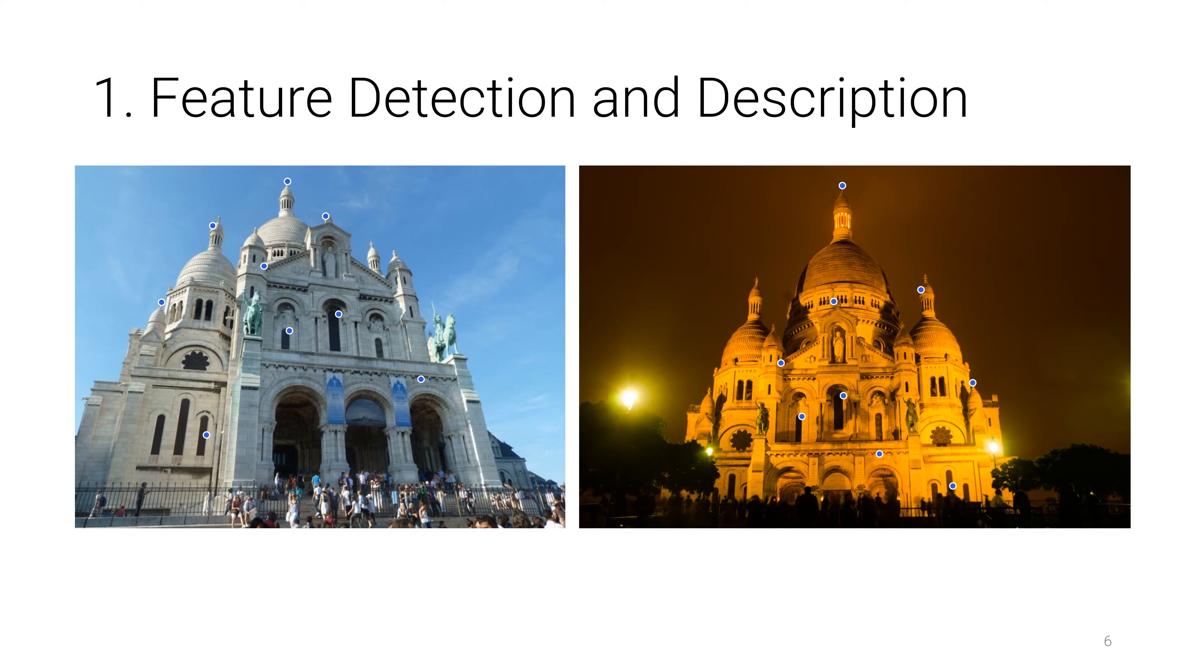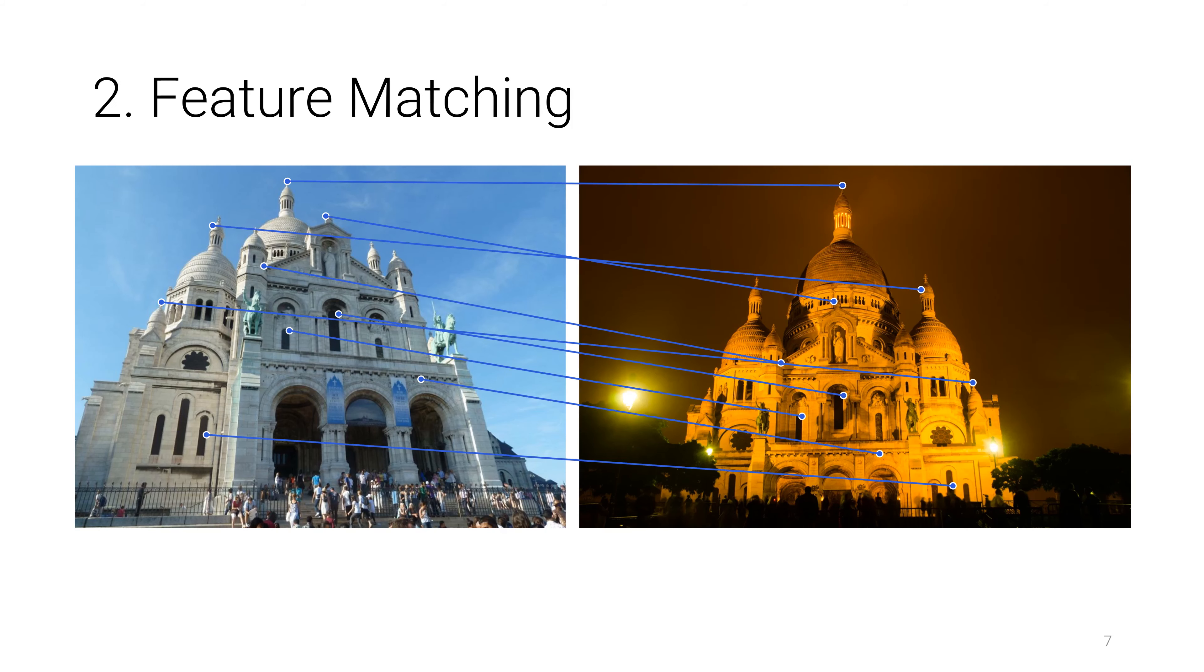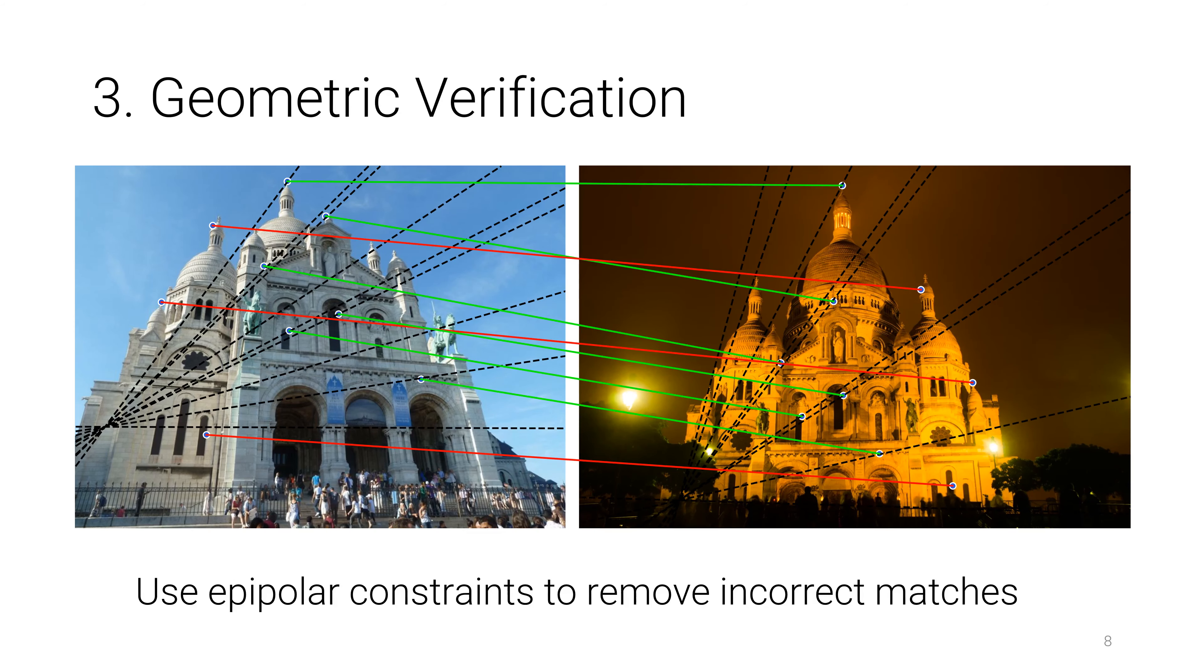Each keypoint is matched to its most similar counterpart in each of the other images. Since descriptors only encode local information, this can yield a large number of incorrect matches. Using epipolar geometry, invalid matches can be filtered at an early stage.